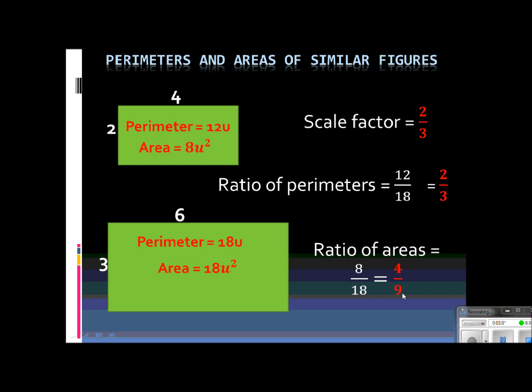So again, we've got 2 to 3, 4 to 9. Hopefully it's jumping out at you now that we just squared this. 2 squared is 4, 3 squared is 9. So the ratio of the areas is always the scale factor or the ratio of the perimeters just squared.